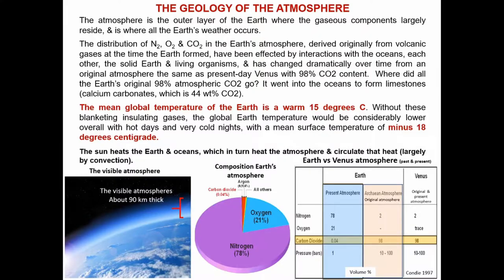Where did all the Earth's original 98% carbon dioxide go? It went into the oceans to form limestones, calcium carbonates, which is 44 weight percent carbon dioxide.